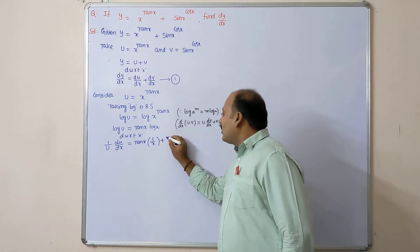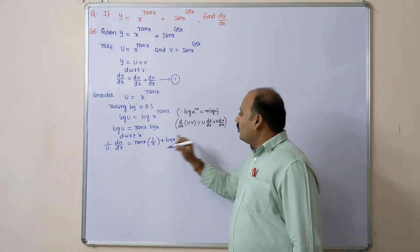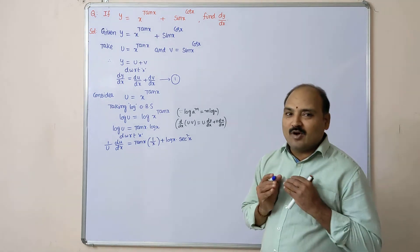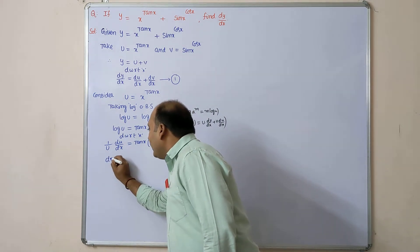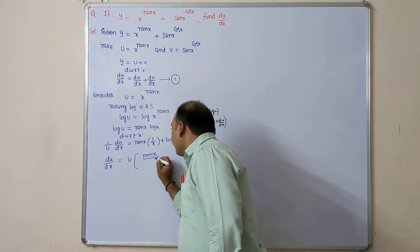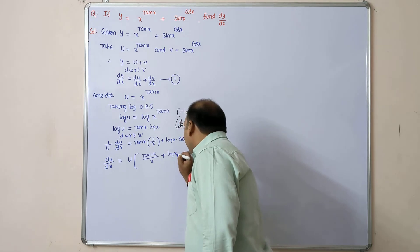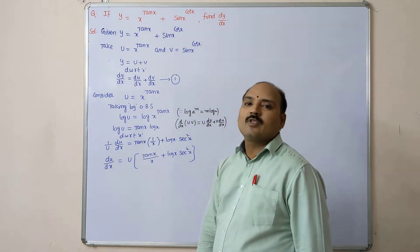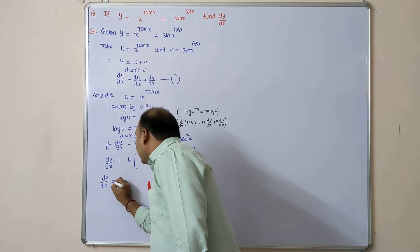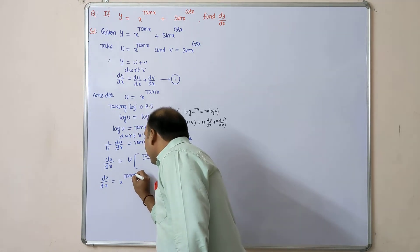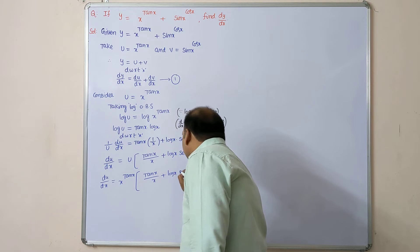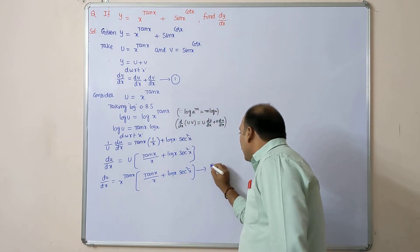So (1/u) · du/dx = tan x/x + log x · sec²x. Taking u to the other side: du/dx = u · (tan x/x + log x · sec²x). Substituting u = x^(tan x): du/dx = x^(tan x) · (tan x/x + log x · sec²x). Put this as equation number 2.